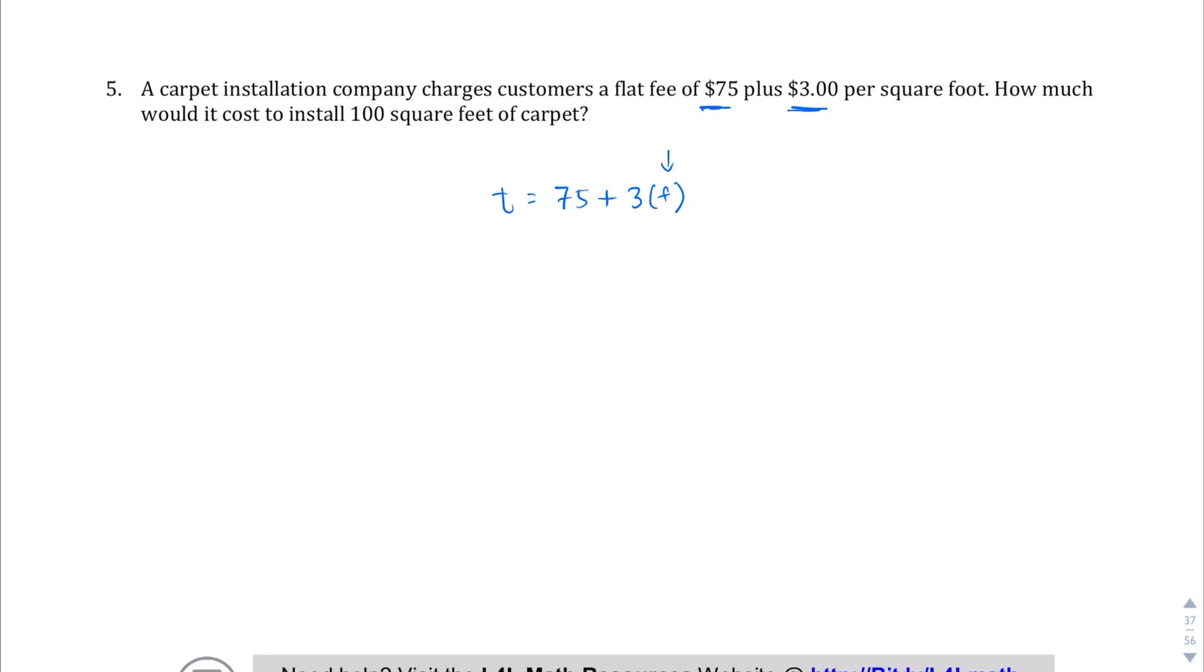So instead of F, we're going to put 100. So T equals 75 plus 3 times 100. So let's find how much that costs. 75 plus 300, and that's pretty easy. You can do that in your head. I hope. $375 is the total installation cost.